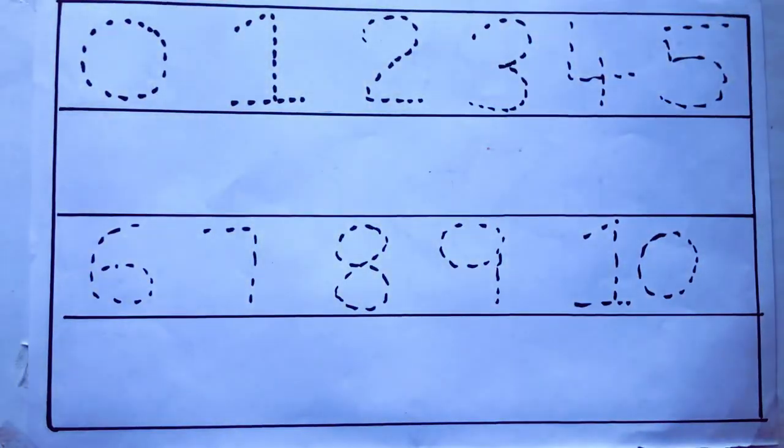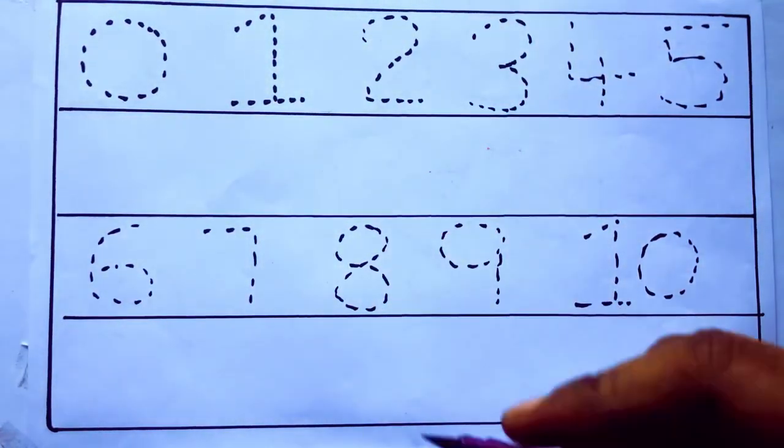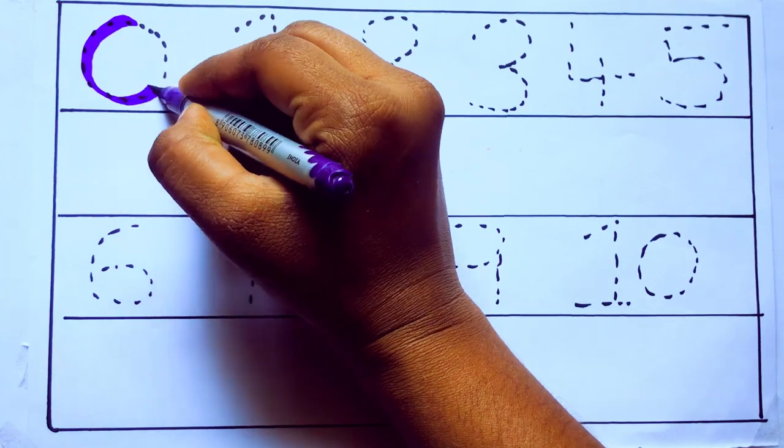Let's draw numbers. Violet color, 0, Z, E, R, O.